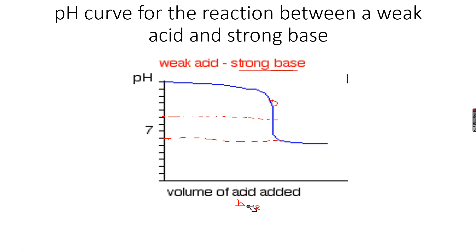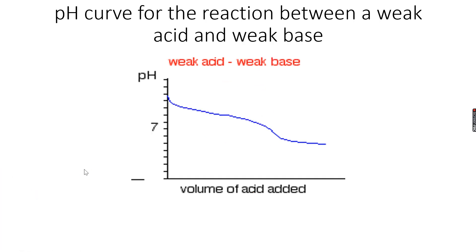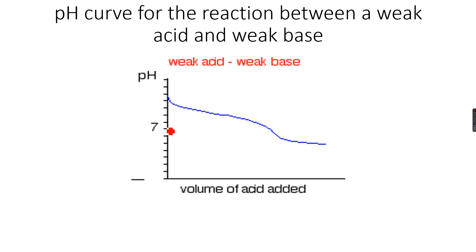That covers that pH curve. Now let's move to the last pH curve, which is between a weak acid and a weak base. You can see that the starting pH is very low, which means the base is a weak base, and the end pH is very high, which means the acid is a very weak acid. Drawing the equivalence point will be difficult, but it will be somewhere in the middle.